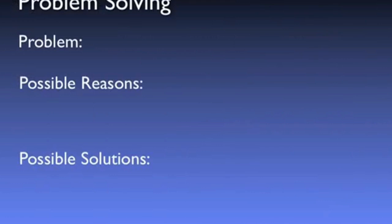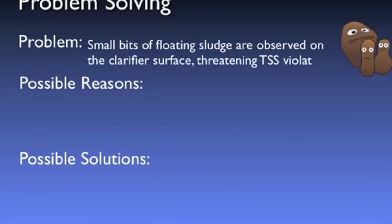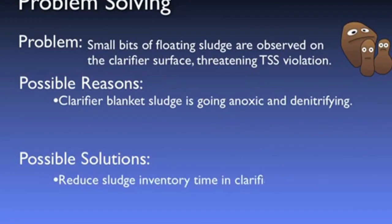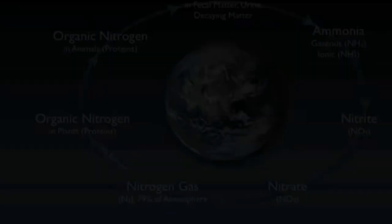Finally, during your afternoon stroll through the plant, you notice unsightly small bits of floating sludge accumulating on the surface of the clarifier. It becomes obvious that your sludge blanket at the bottom of the clarifier is going anoxic and denitrifying, causing sludge to float due to the generation of nitrogen bubbles. You spring to action by increasing the recycle rate, thus reducing the sludge inventory time in the clarifier, preventing this unwelcome denitrification.